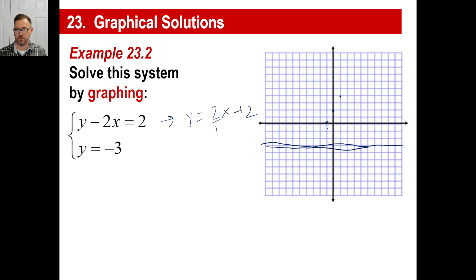2 down, 1 over. 2 down, 1 over. And then 2 down, 1 over. Boom. And you can do another kind of line like that. So y is equal to negative 3. That's this line. Y is equal to 2x plus 2. That's your answer.